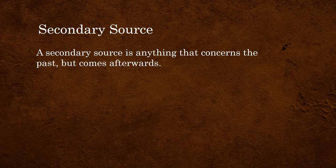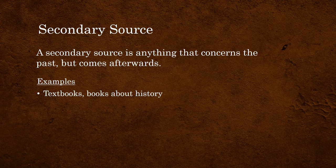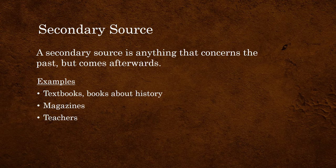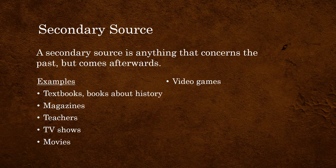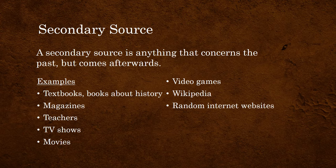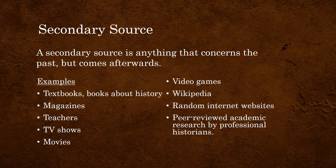So what about secondary sources? A secondary source is anything that concerns the past but comes afterwards — it's not something created in the past. An obvious secondary source would be your textbook, or any book about history. They may have lots of information about the past, but they weren't created in the past — they were created afterwards. Magazines about history, teachers, TV shows, movies, video games — all of these are secondary sources. They were not created in the time period you're studying. Wikipedia is a secondary source. Random internet websites are secondary sources. And even peer-reviewed academic research by professional historians, which is of course the most important secondary source, is still a secondary source.